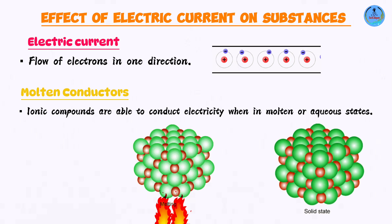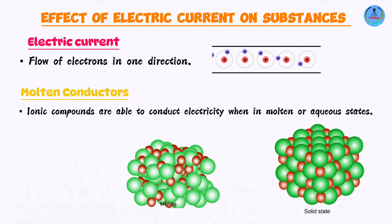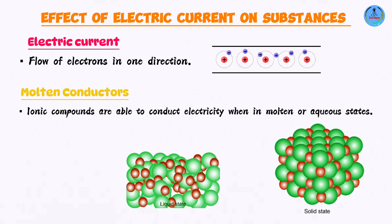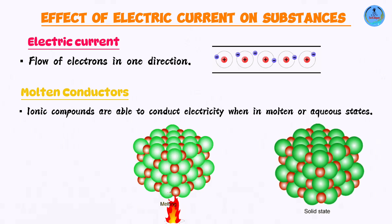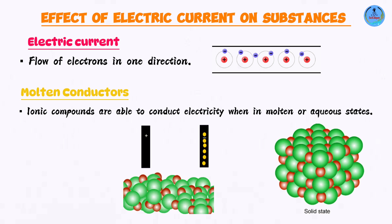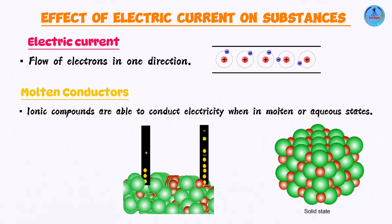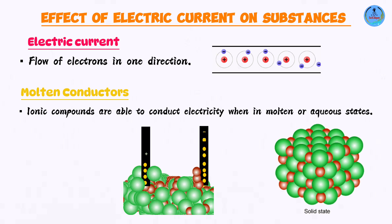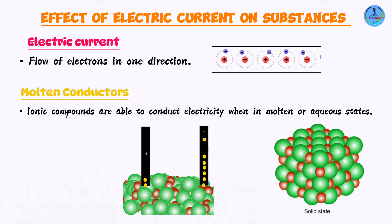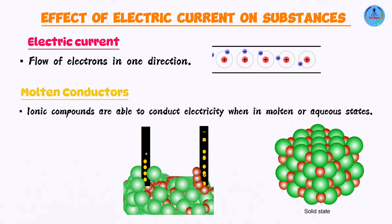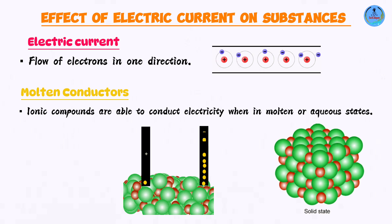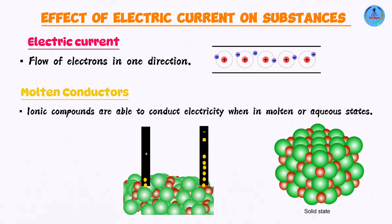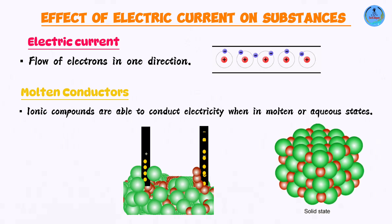But if you were to take the same ionic compound and melt it, it's going to be capable of conducting electricity. If you were to take sodium chloride, heat it till it melts, and have a setup such as this, then yes, an electric current is going to be conducted. Why? Because you freed up the ions. When the substance melts, the ions now become mobile — they are now capable of moving from one point to another within the structure, and hence they can conduct an electric current.